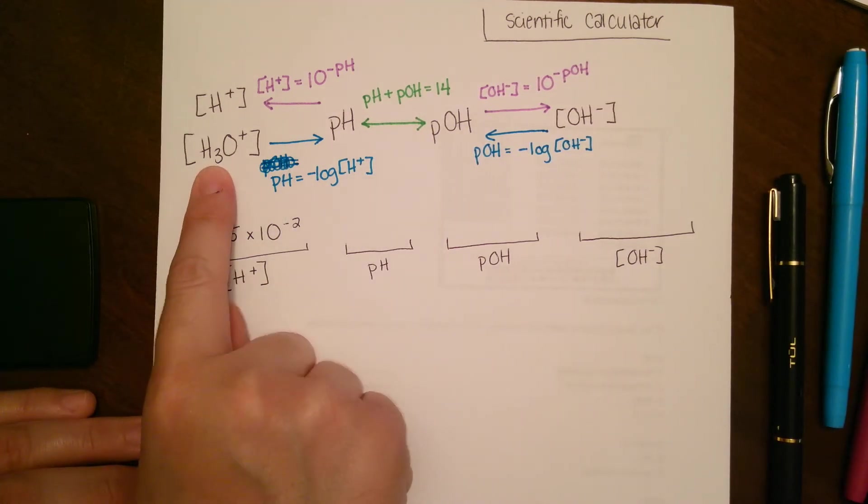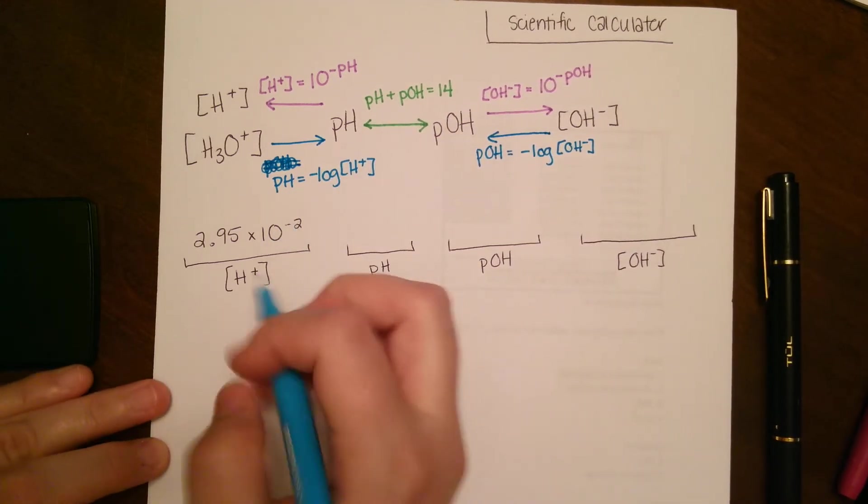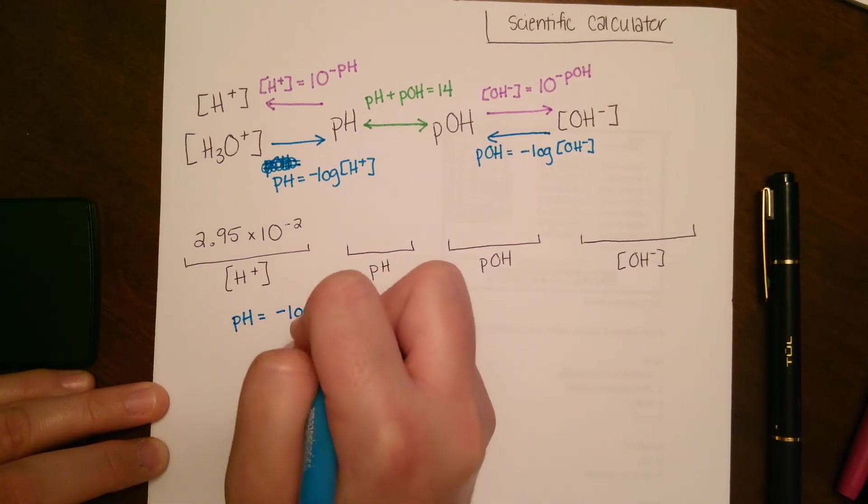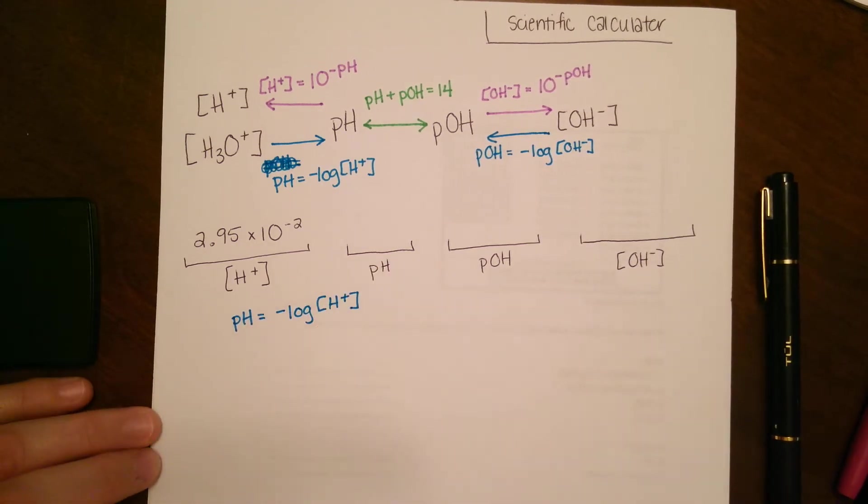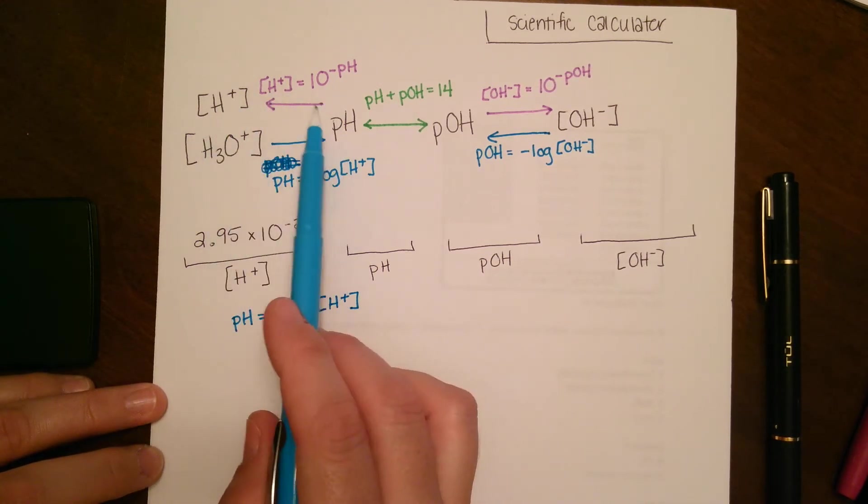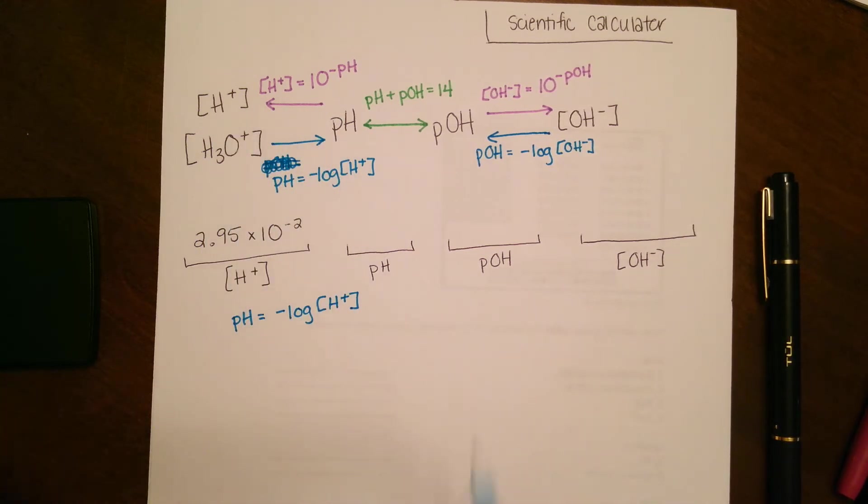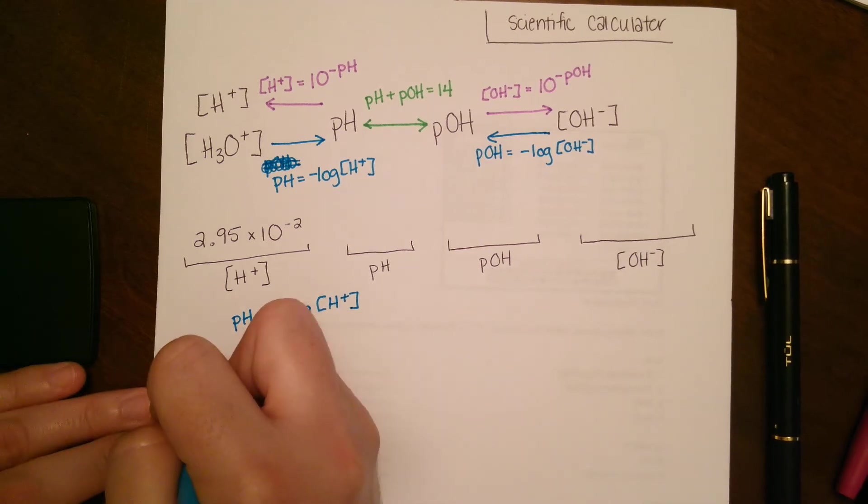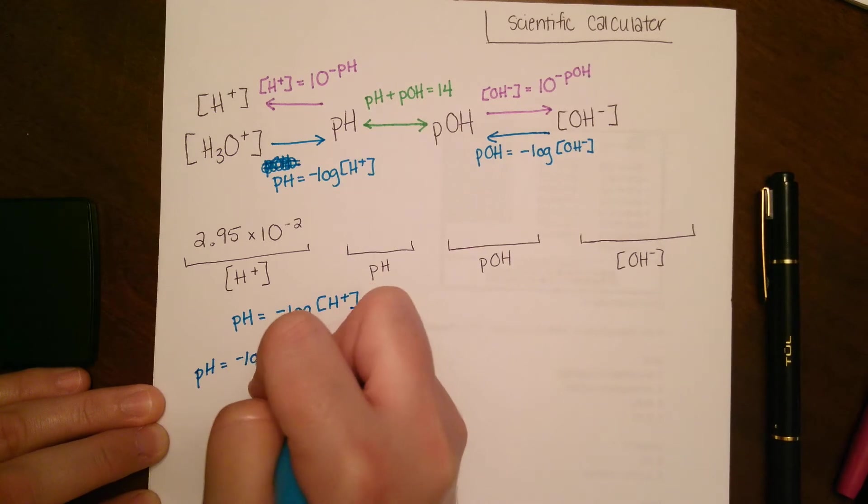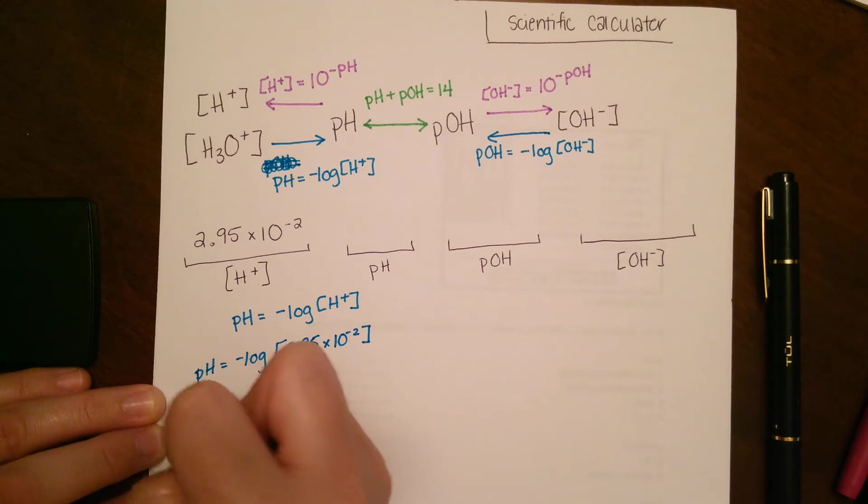Our first step is going to be hydronium to pH. When we're going from hydronium to pH, there's one equation we're going to use: pH = -log[H+]. Keep in mind that the direction you're going in between these two determines which equation you use. Since we have hydronium we're using that bottom equation. pH = -log(2.95 × 10^(-2)).